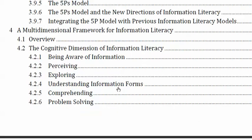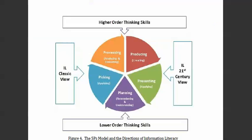However, if you really organize it and keep to your themes and sub-themes, it isn't as complicated. The final thing you can do is create useful graphics. In this case, the student summarized their findings into five key areas about information literacy: processing, producing, presenting, planning, and picking — then compared them with higher-order skills and lower-order skills, and classic views versus 21st century views. That helps bring everything together in a coherent picture.